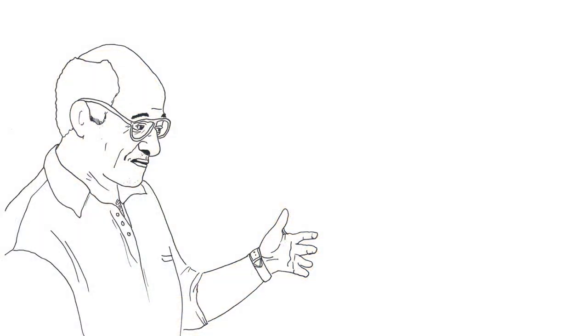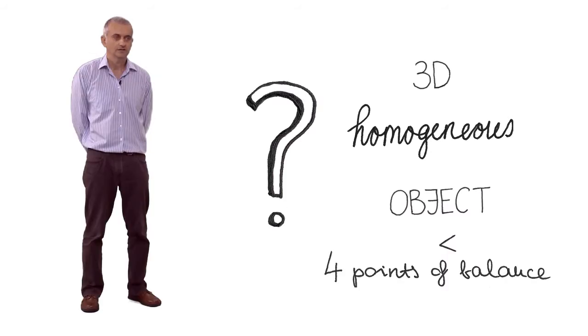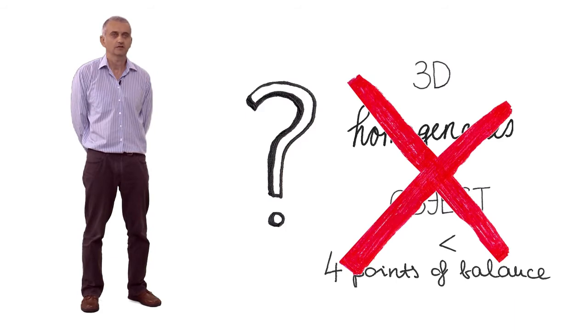He presented me with a question: whether a three-dimensional homogeneous object could exist with less than four static equilibrium points. The general belief was that such an object cannot exist.